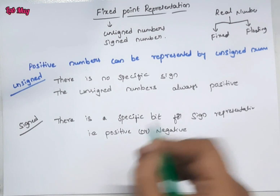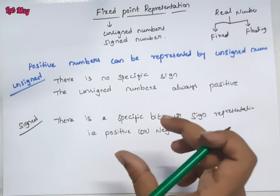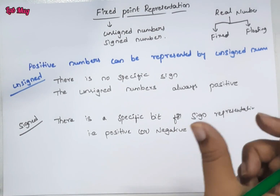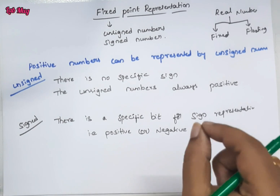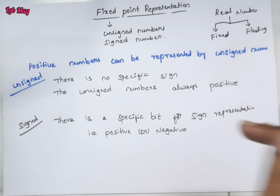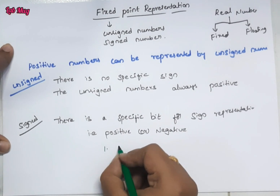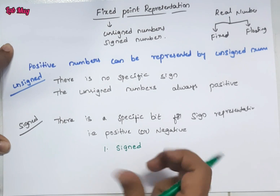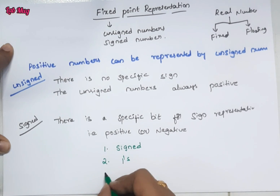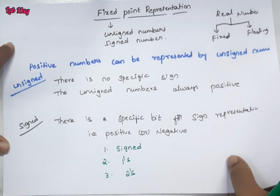For signed numbers, we perform three categories. The first one is sign and magnitude representation, the second one is one's complement representation, and the third one is two's complement representation. So these three calculations we perform for signed representation.